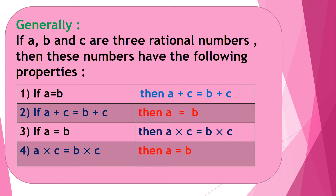Property three: if a equals b, then multiplying both sides by the same constant c gives a times c equals b times c. Property four: if a times c equals b times c, then a equals b.